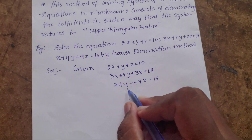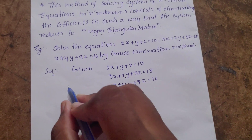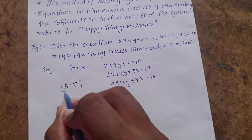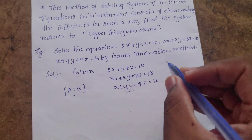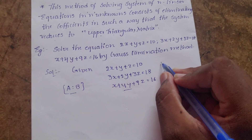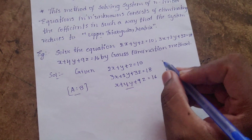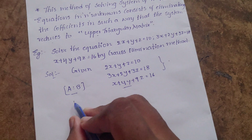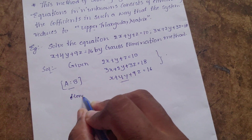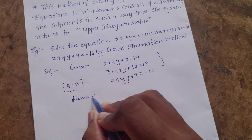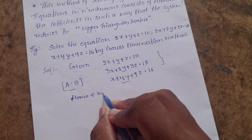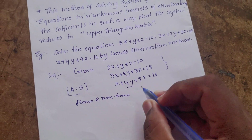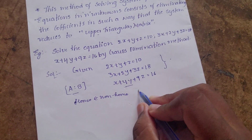If we want to use the matrix formula, we convert the system to matrix form — specifically, we convert it to an augmented matrix.